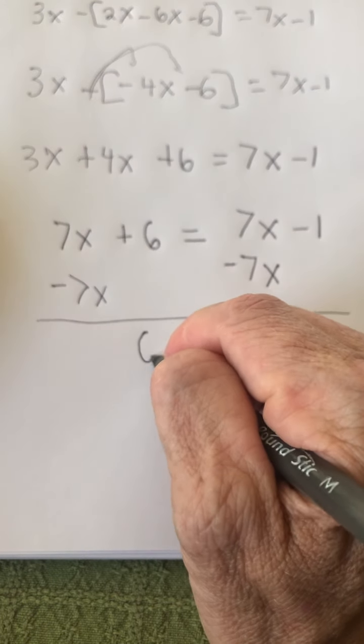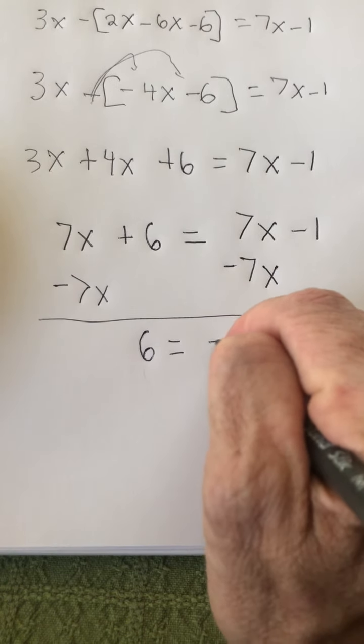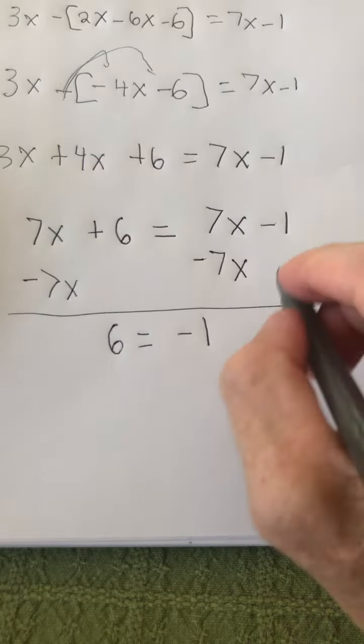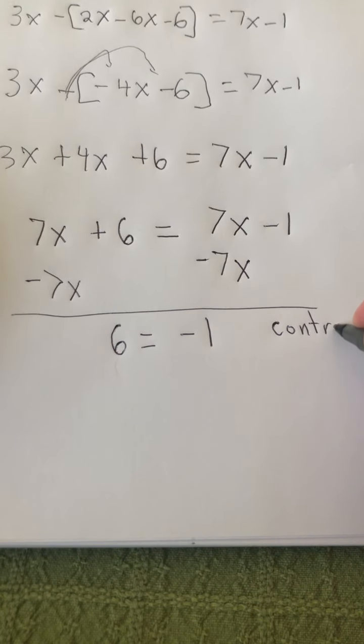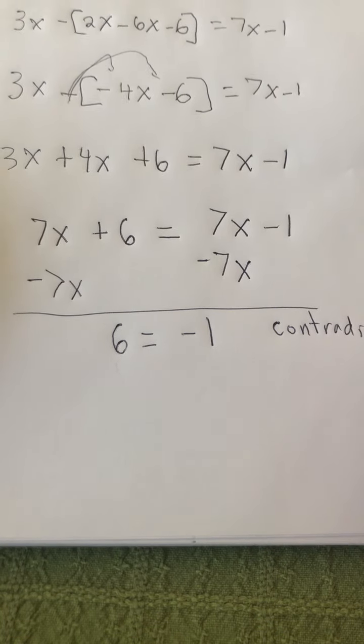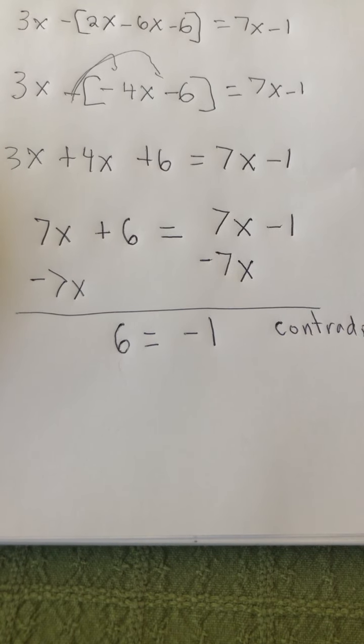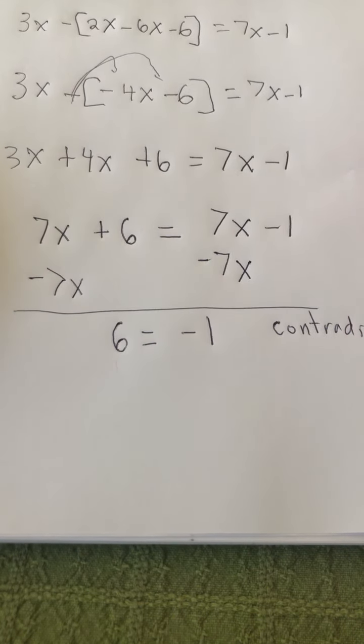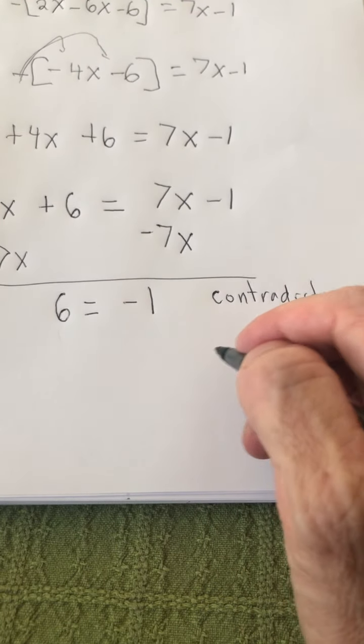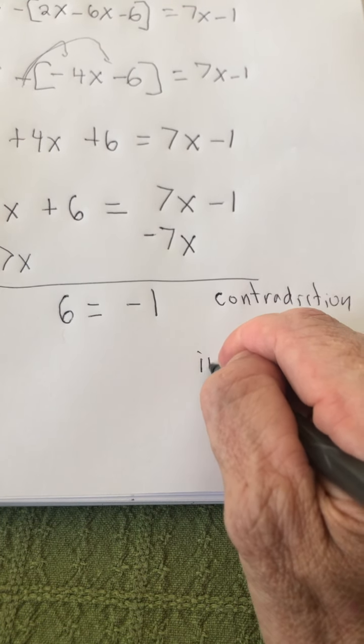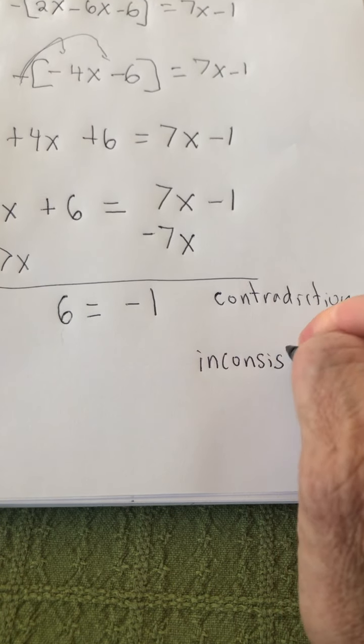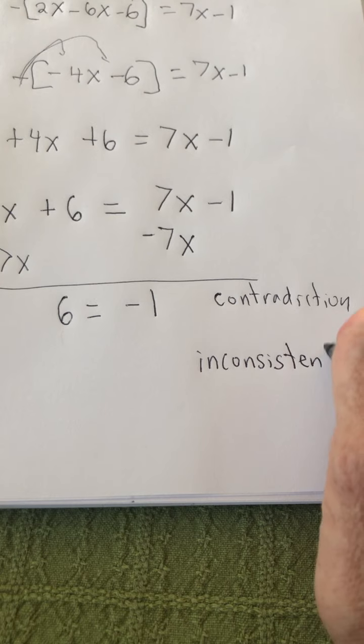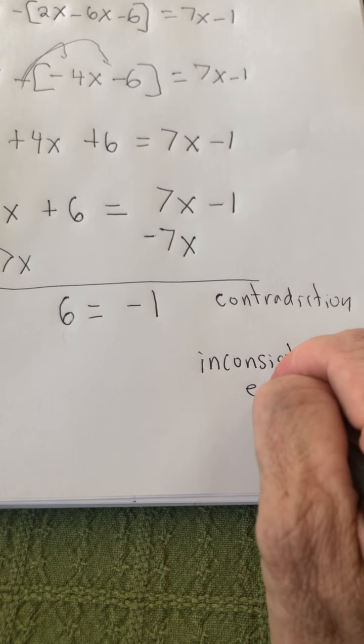And I'm left with a statement 6 equals negative 1, which of course is not true. You can think of that as being a contradiction. So the way we would classify our original equation, it is an inconsistent equation.